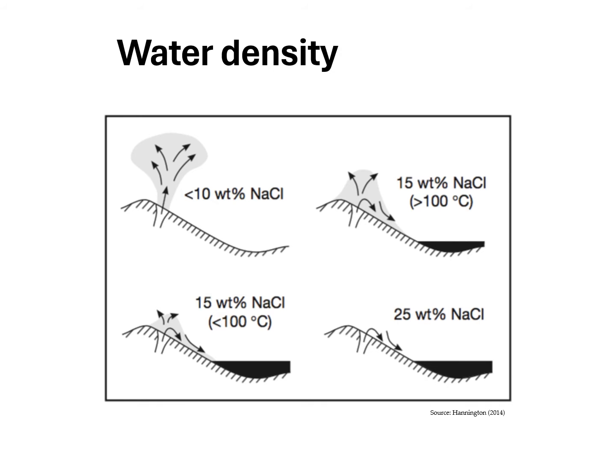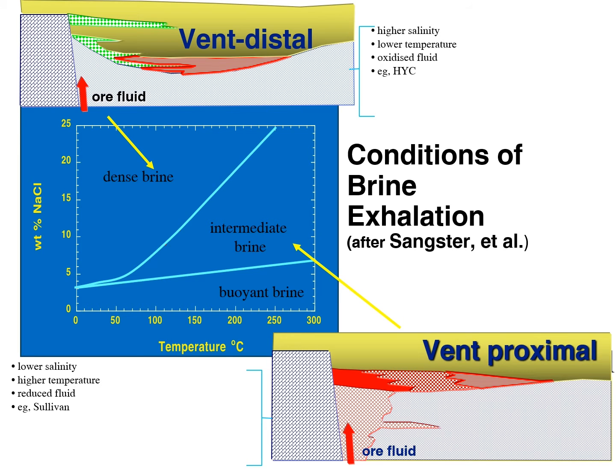Water density is really important for how these deposits form. Vent proximal deposits are less saline and hotter, so they vent and mix more readily with seawater. Vent distal deposits are cooler and much higher salinity, so they sink and fill topographic lows where bacterial sulfate reduction helps precipitate metals. In summary: vent distal deposits are higher salinity, lower temperature, and oxidized — the HYC deposit in Australia is an example. Vent proximal deposits have lower salinity and higher temperature, giving them lower density, and are more likely to be reduced.